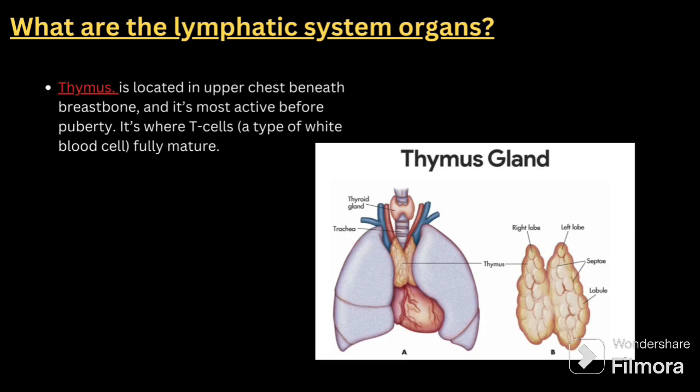The next organ is the thymus. The thymus is located in the upper chest beneath the breastbone. It is most active before puberty. It is where T cells — a type of white blood cell — fully mature. I have given the thymus gland image here as well, so you can go through it.